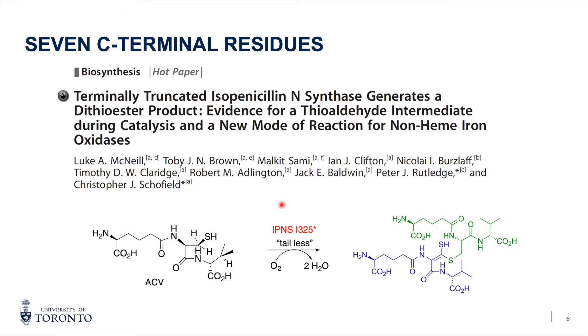And now I'd like to highlight some new findings on IPNS, and this result was published in 2017. They introduced mutations to the IPNS to truncate the C-terminal end to make a tailless mutant. And it turns out this mutant can take two ACV substrates and make a CS bond here to connect them.